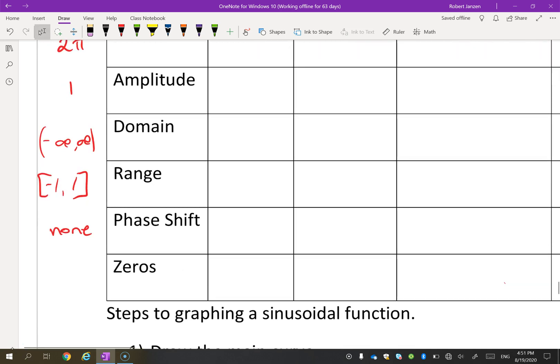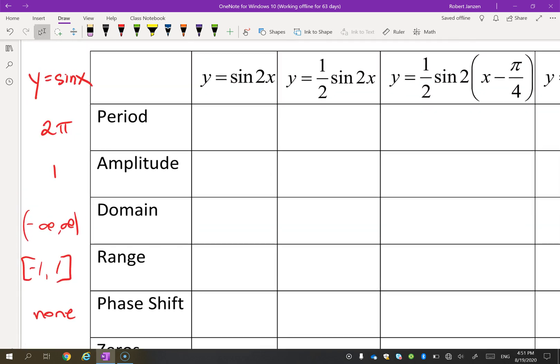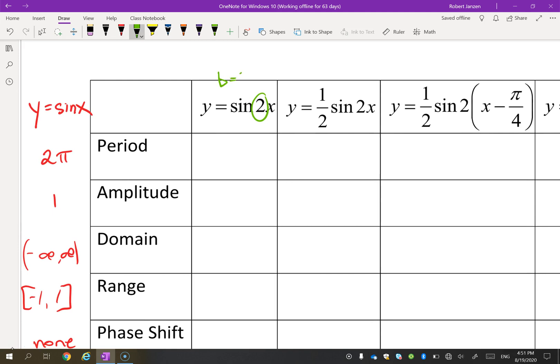The zeros, where do the zeros happen? Every kπ, where k is an integer. Okay, let's take a look at what happens when we start putting some transformations on. What is this 2? This 2 is a b value. And what do we do with b values? That affects the horizontal, and it's a dividing by b. Now before we had the 2 there, the period was 2π. So now we're going to take the period and divide by 2. So the period is now π. So you can picture that sine graph has just been shrunken.